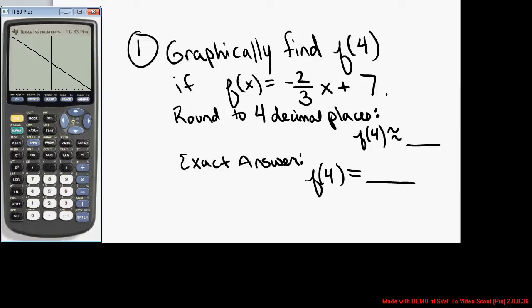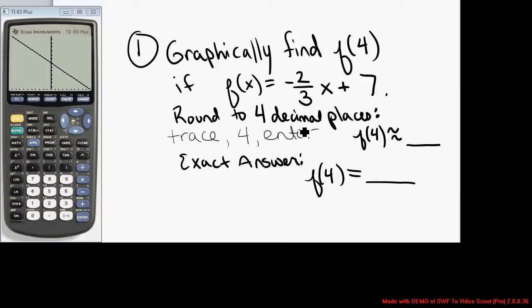I now have the graph of the line with slope negative 2 thirds and y-intercept 7. I can approximate here — if I go over to x equals 4, I see that it's going to be below a height of 7. To do it on the calculator and actually identify the value of f of 4, we're going to hit trace, then type 4, then press enter.